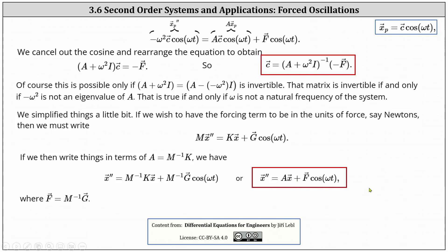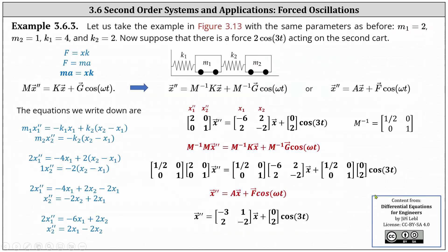Let's look at an example from figure 3.13, where we have two masses and two springs: M one equals two, M two equals one, K one equals four, and K two equals two. Suppose there is a force of two cosine three t acting on the second cart. We set up the system of equations modeling this system, reviewing the case without the oscillating force two cosine t.